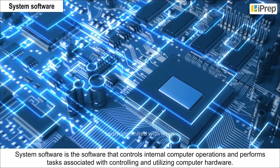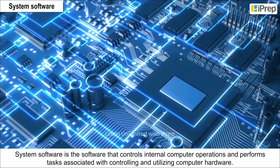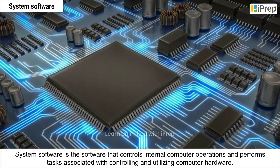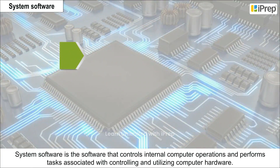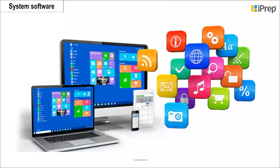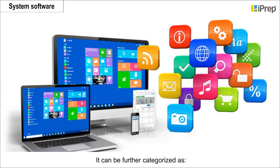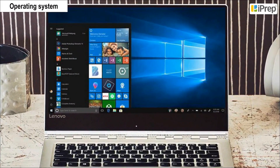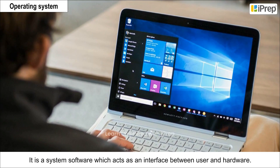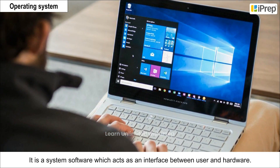System software is the software that controls internal computer operations and performs tasks associated with controlling and utilizing computer hardware. It can be further categorized. The first category is the operating system, which is a system software that acts as an interface between the user and hardware.